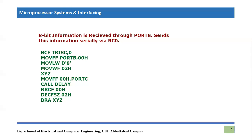Let me write the code. This is the code I have written for this application. The very first instruction is BCF C comma zero, which means we are declaring pin zero of port C as an output port. Then move-file-to-file port B to 0x00 — whatever eight-bit information is being received at port B is copied into 0x00. So a copy of port B is now stored in 0x00.